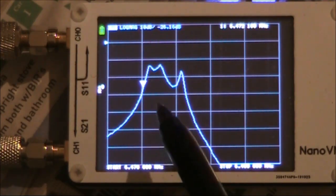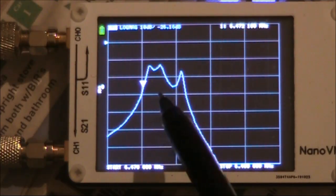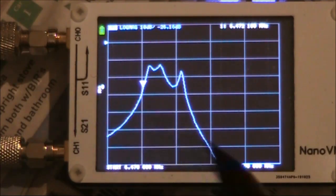And if you wanted to narrow the bandwidth, like if you were using this on CW, then you'd increase the value of the capacitors.